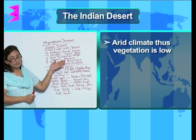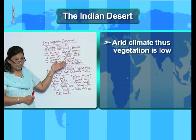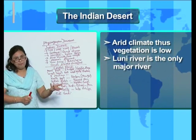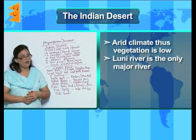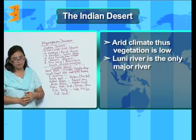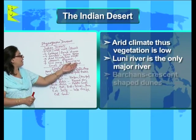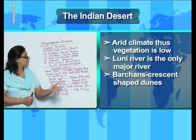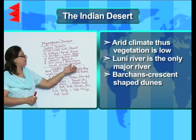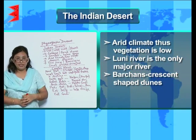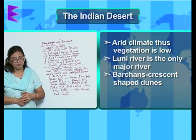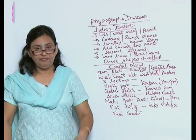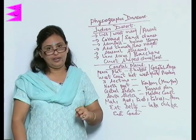It does have some seasonal streams but the Luni River is the only major river of the Indian Desert. We see a lot of barchans here, which are the crescent-shaped dunes, especially at Jaisalmer. So you see the contrast in the physiographic divisions of India.